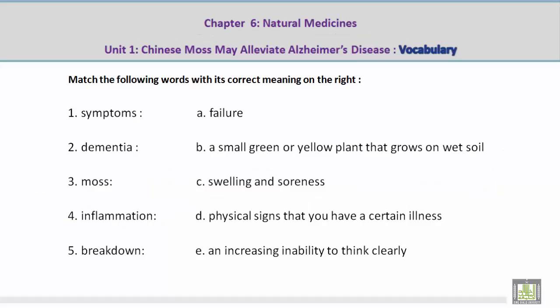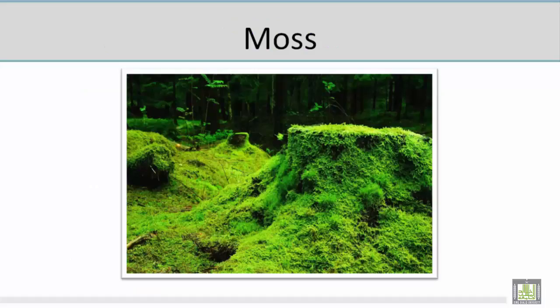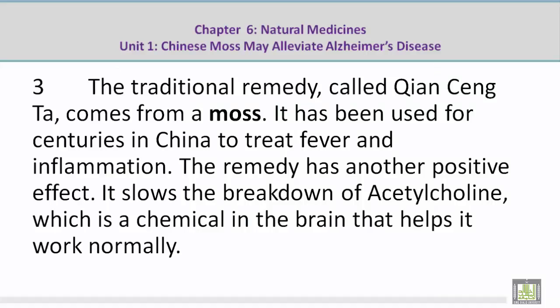Number 3: Moss. Mohamed, please give us the correct meaning on the right. B — A small green or yellow plant that grows on wet soil. Now let's take a look at a picture related to the vocabulary word 'moss.' Mohamed, could you please talk about this? In this picture I see soil that gets wet, and the moss grew up green and yellow — a small plant that grows on wet soil. Now let's take a look at a paragraph: The traditional remedy called Qian Seng Ta comes from a moss.